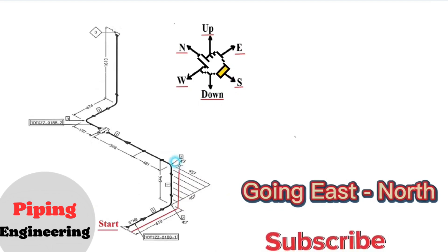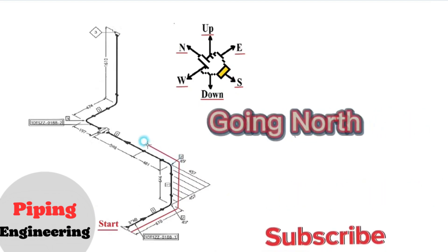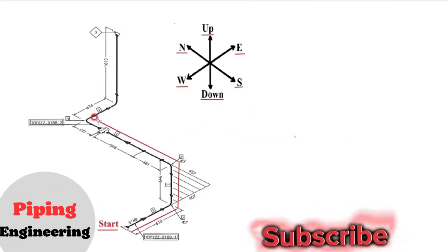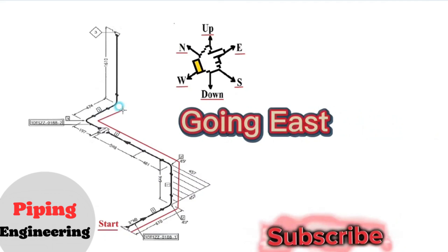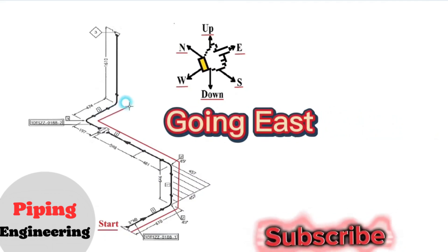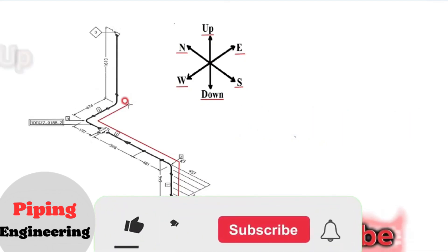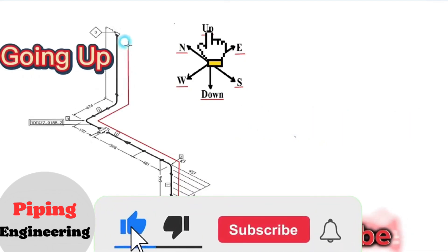Then the pipe travel continues to the north direction. At this point, the pipe travels to the east direction. Then the pipe travels continue to the up direction and the correct reading of the pipe drawing is completed.